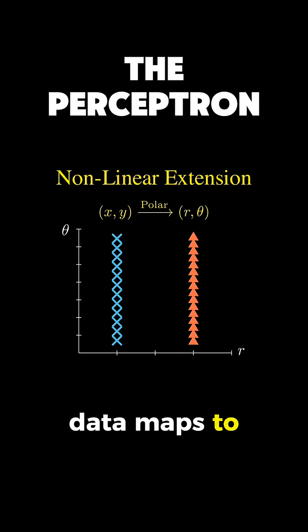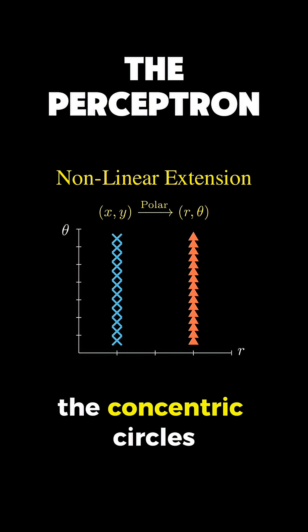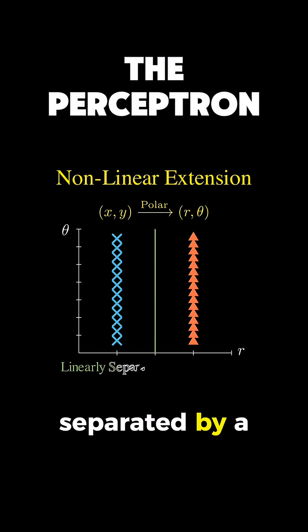In this representation, the concentric circles become parallel strips, which are easily separated by a straight line.